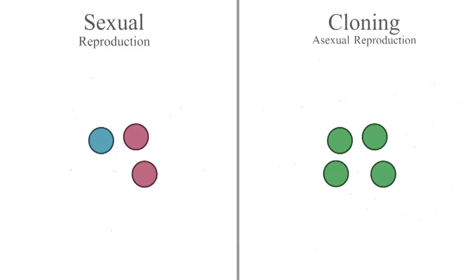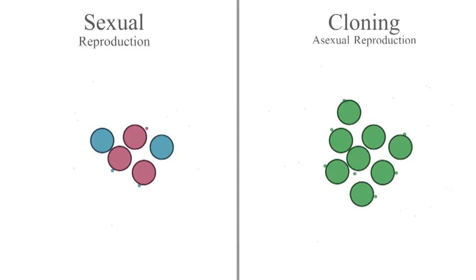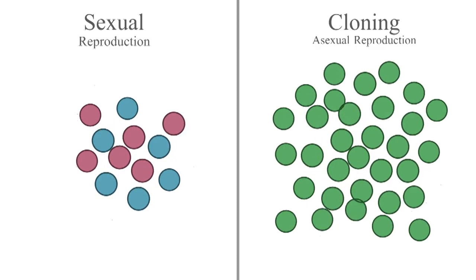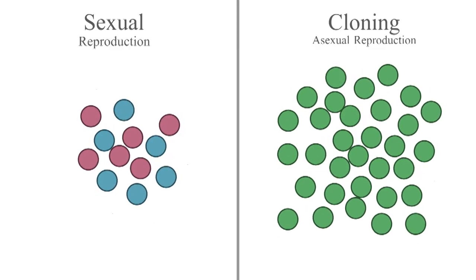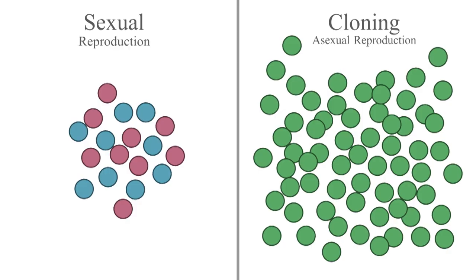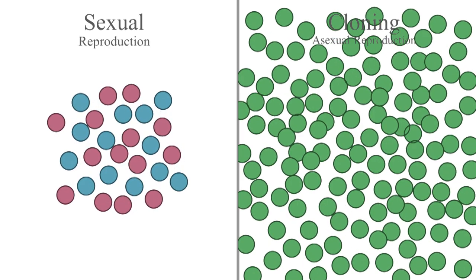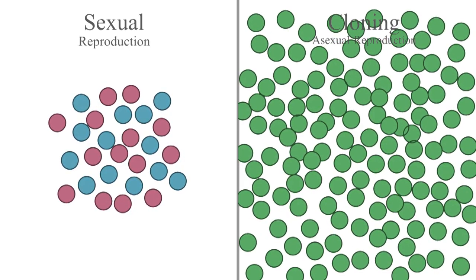Consider two populations. One is reproducing sexually and one is cloning itself. The cloning population can reproduce much faster. The sexual population is growing more slowly because half the population isn't producing children. This half is called males.